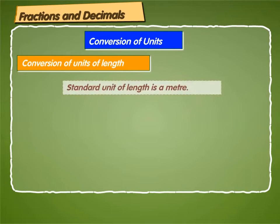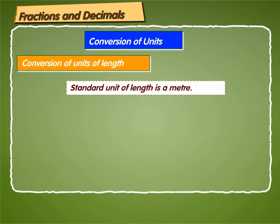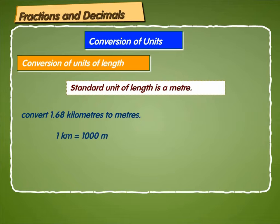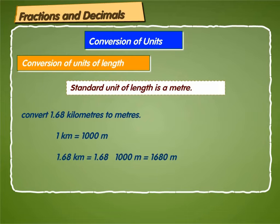We know that the standard unit of length is a metre. Let us convert 1.68 kilometres to metres. As we know, 1 kilometre is equal to 1000 metres. Therefore, 1.68 kilometres is equal to 1.68 into 1000 metres, which is equal to 1680 metres.